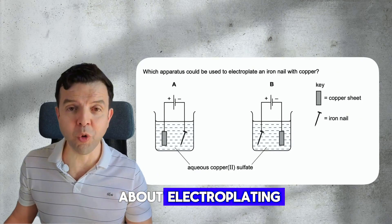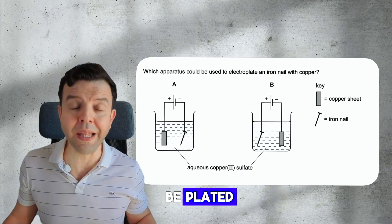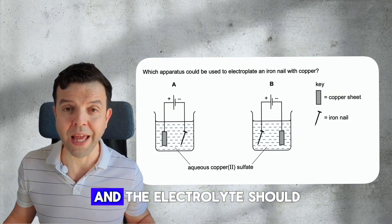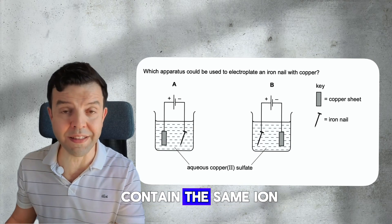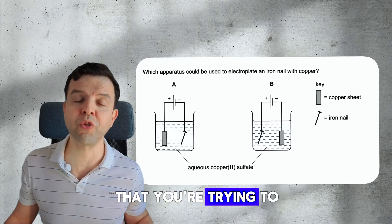If you've been asked about electroplating, then the object to be plated should be placed at the cathode and the electrolyte should contain the same ion that you're trying to plate with.